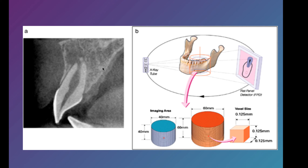With this, we can rotate the tooth and get a volume of the area — a voxel — as opposed to just a small two-dimensional area, which would be a pixel.